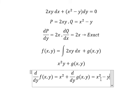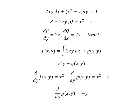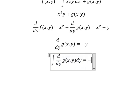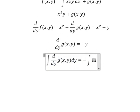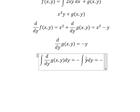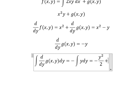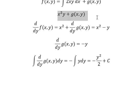We simplify x² from both sides and we have negative y equals d/dy g(x,y). Next we put the integration for both sides. The integration of negative y, we have negative y²/2 plus C.